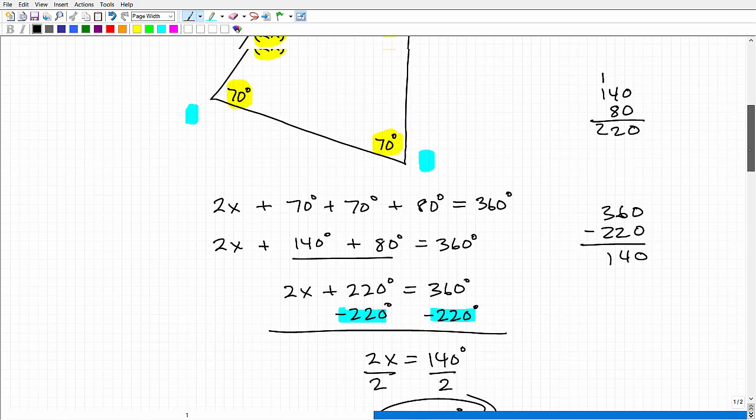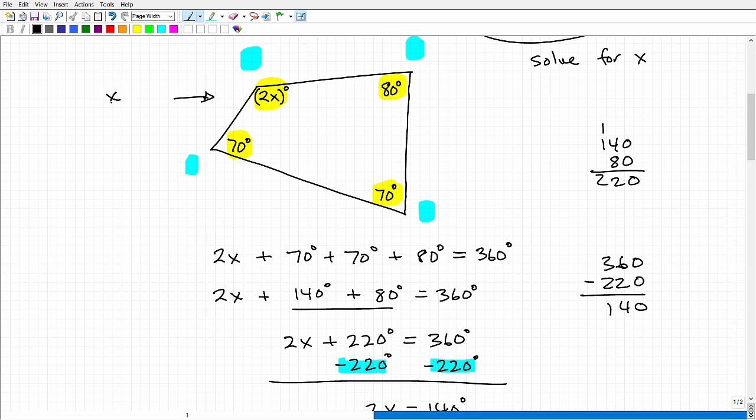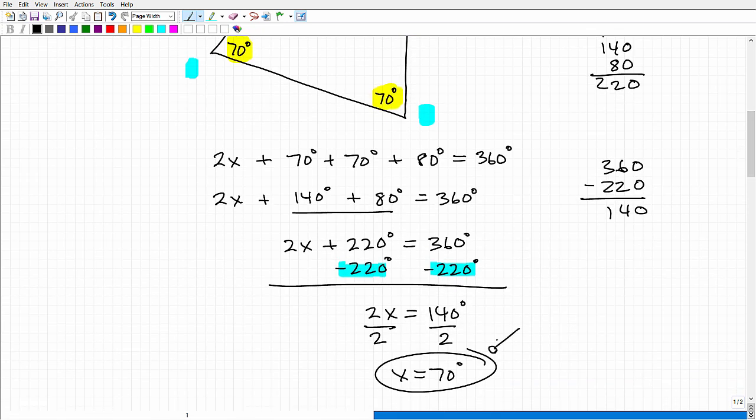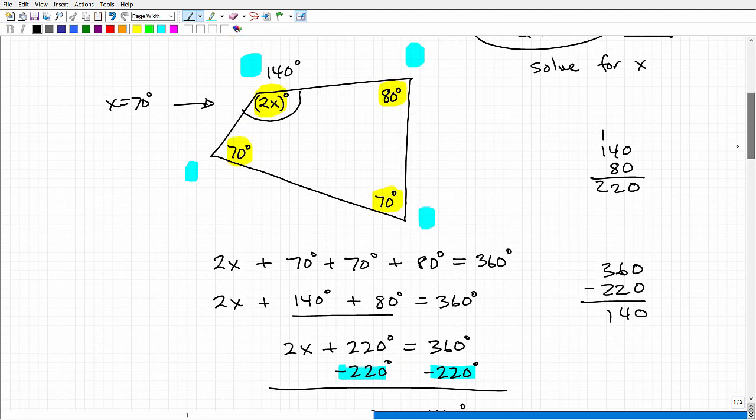But when you look at that, we know x equals 70 degrees. But if you look at this figure, this looks like an obtuse angle. So x is 70 degrees, but this angle here is 140 degrees. I've got to be very careful. I asked you what is this angle? What's the missing angle here? Oftentimes students will say 70 degrees because they'll solve the equation, but they're not thinking about what that represents. It's twice that value is the angle. So that's that obtuse angle of 140 degrees.